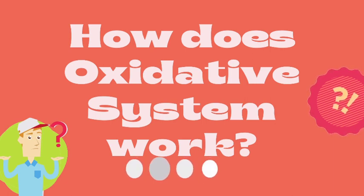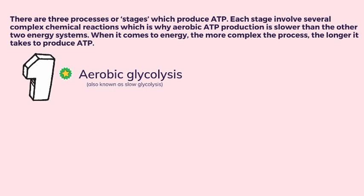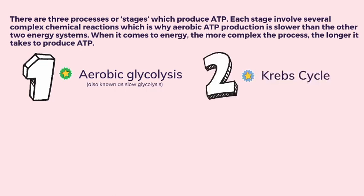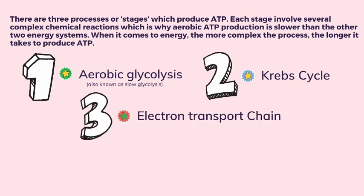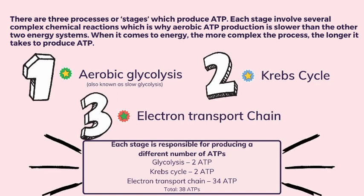How does the oxidative system work? There are three processes or stages which produce ATP. Each stage involves several complex chemical reactions, which is why aerobic ATP production is lower than the other two energy systems. When it comes to energy, the more complex the process, the longer it takes to produce ATP. The three stages are: Number 1, aerobic glycolysis, also known as slow glycolysis. Number 2, the Krebs cycle. Number 3, the electron transport chain.